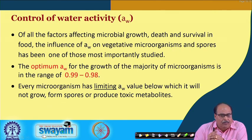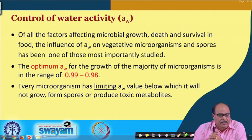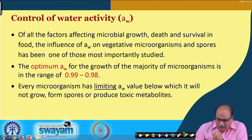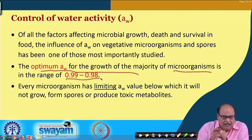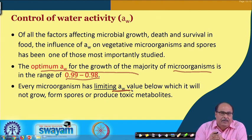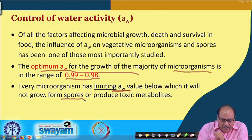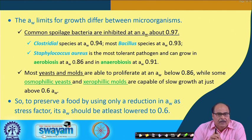The other factor is the control of water activity. Water activity is one of the major factors which influences the growth and multiplication of microorganisms in food. The optimum water activity for growth of the majority of microorganisms is in the range of 0.99 to 0.98. Every microorganism has a limiting AW value below which it will not be able to grow, form spores, or produce toxin — and this is taken care of while creating conditions for minimizing microbial growth.